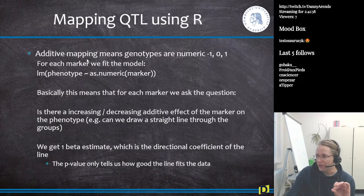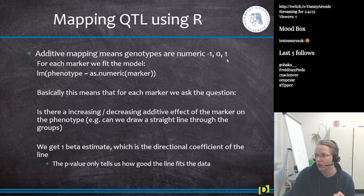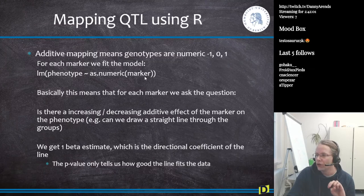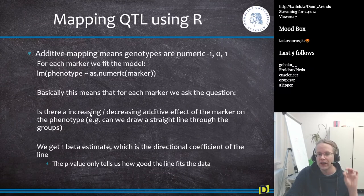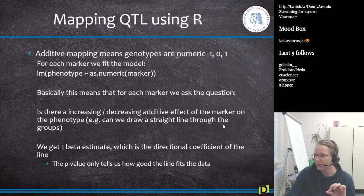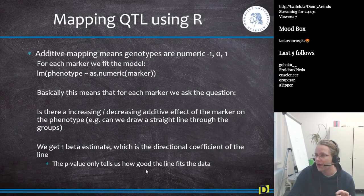For additive-only mapping, we code the genotype groups numerically: AA as minus one, heterozygotes as zero, and BB as one. Then we fit a linear model regressing the phenotype on these numeric values - essentially drawing a straight line through AA, AB, and BB. The question we ask is: is there an increasing or decreasing additive effect of the marker on the phenotype? We get one beta estimate as the directional coefficient, and the p-value tells us how well the line fits the data.